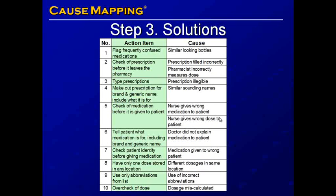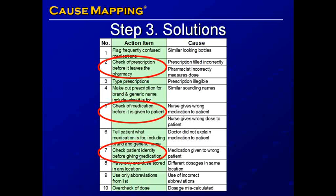Once possible solutions have been identified, we can capture all solutions to be implemented into the action item table — this is part of step 3, which is solutions. We capture the action item and the cause to ensure the action item addresses the cause to reduce its potential occurrence. Notable process solutions include: solution 2, check of the prescription before it leaves the pharmacy; solution 5, check of the medication before it's given to the patient; solution 7, check patient identity before giving the medication; and solution 10, an overcheck of the dose. These are all process solutions — steps that can be added or adjusted within the process map to make it more effective.